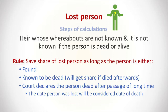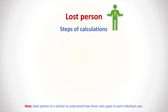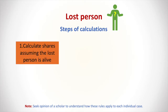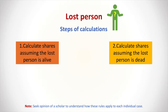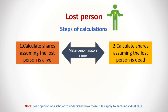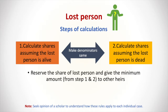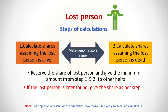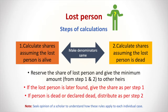Practically, we calculate shares in two scenarios: scenario one, as if the person was alive; and scenario two, as if the person has died. We find a common denominator for both calculations, then reserve the share of the lost person and give the minimum amount from steps one and two to the other heirs. We wait and reserve the share. If the lost person is found, we give the share as per scenario one. If the lost person is dead or declared dead, we distribute the reserved shares as per scenario two.